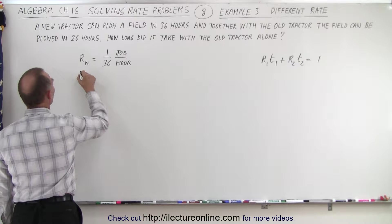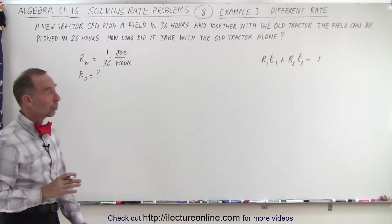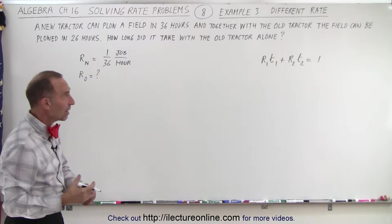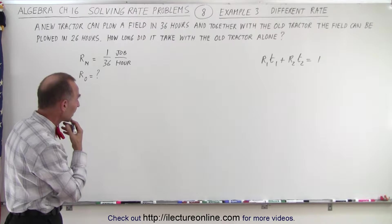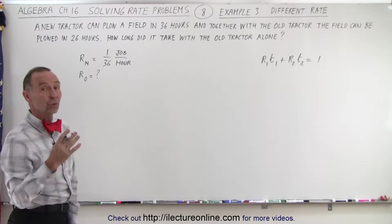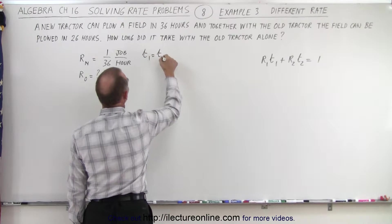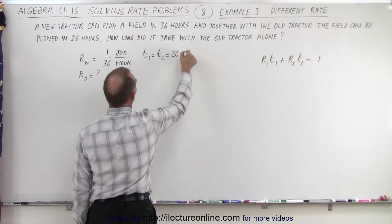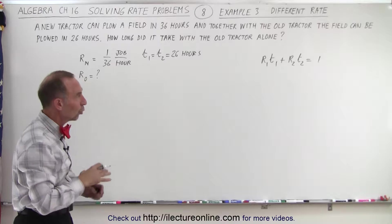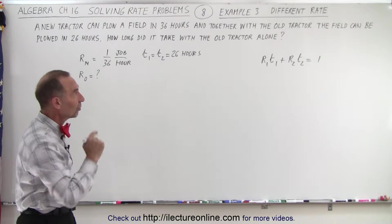What about the rate of the old tractor? Well, that's the unknown — we do not know what it was, that's what we're trying to find. Once we find the rate of the old tractor, we take the inverse to find the time for the old tractor by itself. The time for the whole job: we know that time 1 equals time 2 equals 26 hours, because together the old and new tractor take 26 hours. So the time is the same; it's just that the rates are different.